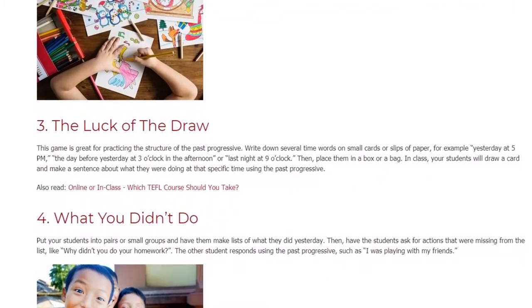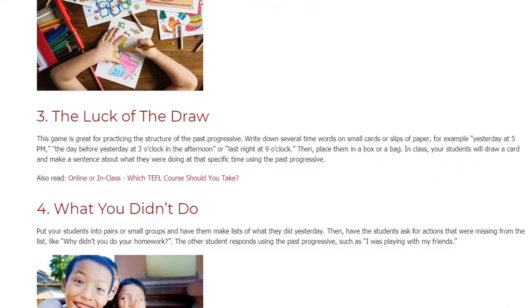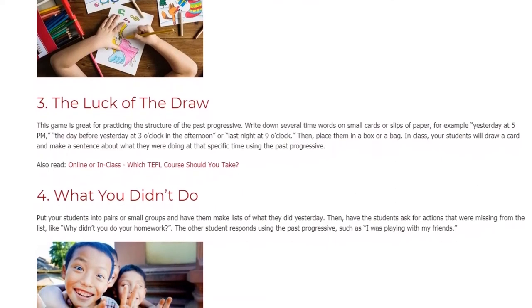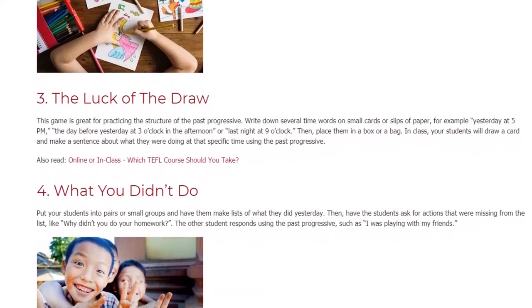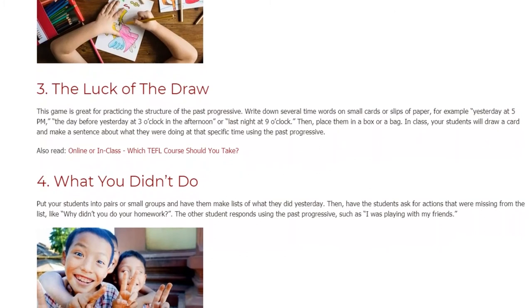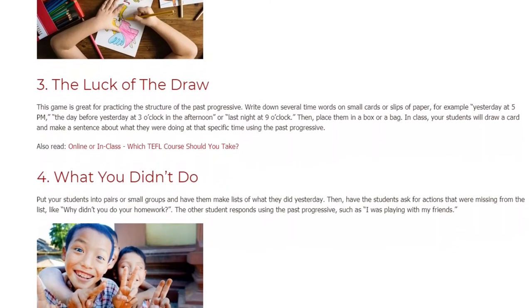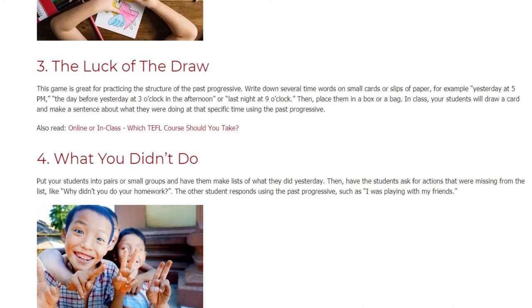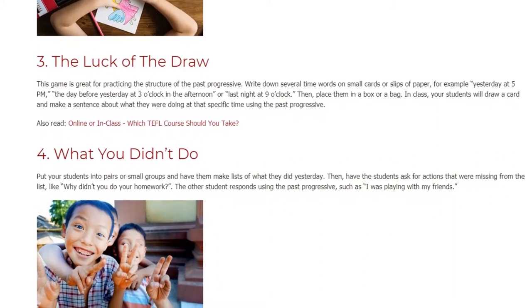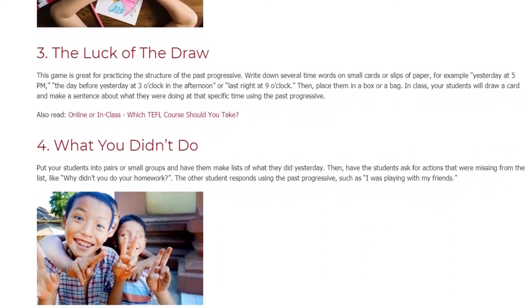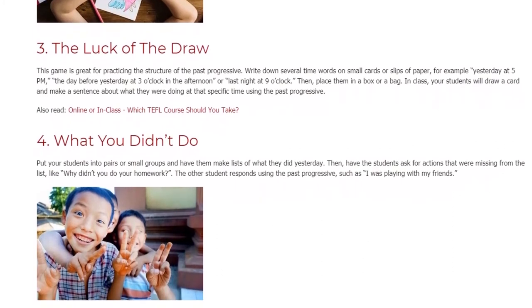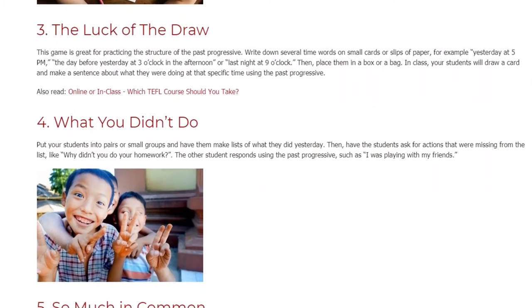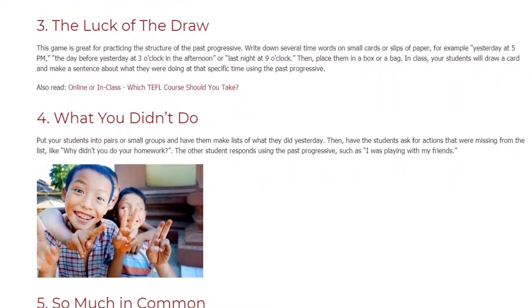Activity 4: What You Didn't Do. Put your students into pairs or small groups and have them make lists of what they did yesterday. Then have the students ask for actions that were missing from the list, like 'why didn't you do your homework?' The other student responds using the past progressive, such as 'I was playing with my friends.'